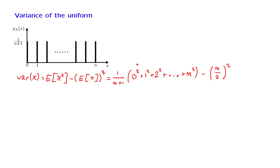Now, to make progress here, we need to evaluate this sum. Fortunately, this has been done by others. It turns out to be equal to 1 over 6 times n times (2n plus 1). This formula can be proved by induction, but we will just take it for granted. Using this formula and after a little algebra, we obtain a final answer of the form 1 over 12 times n times (n plus 2).